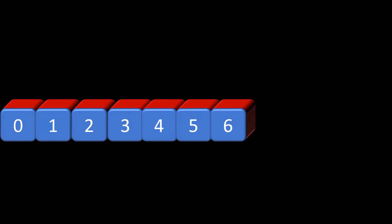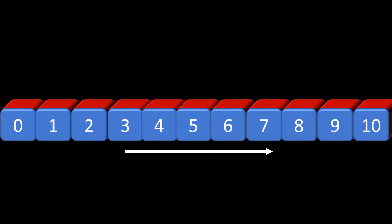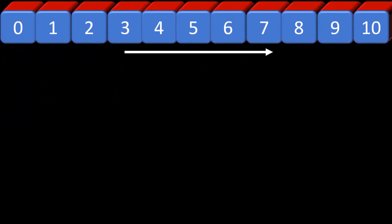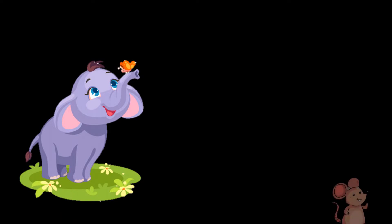Today we will understand the concept of big and small number with the help of numbers from 1 to 10. Just observe the numbers 0, 1, 2, 3, 4, 5, 6, 7, 8, 9, and 10. Notice from left to right we have written the numbers 0 to 10. Now let us understand the concept of big and small number with the help of this fruit basket.